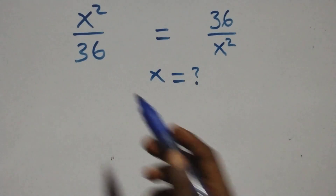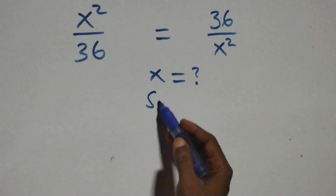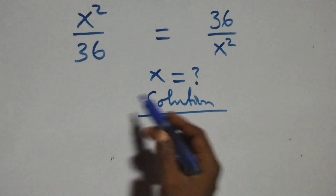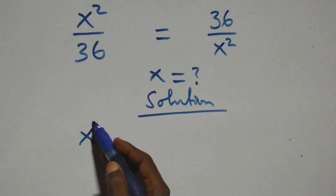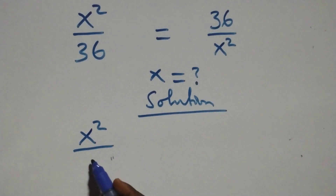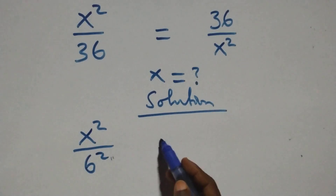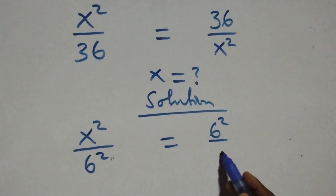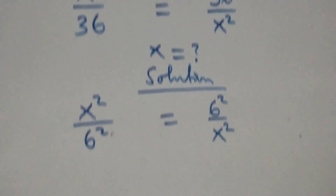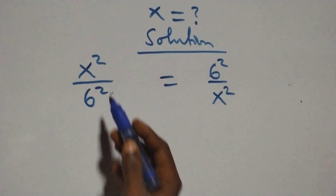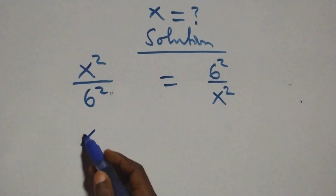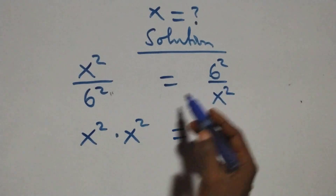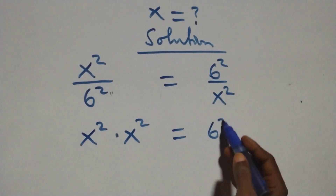Hello, welcome. Here's how to solve this nice exponential equation. We can write x² over 36, which can also be written as 6², equals 6² over x². From here we cross multiply, and x² also equals 6² times 6².